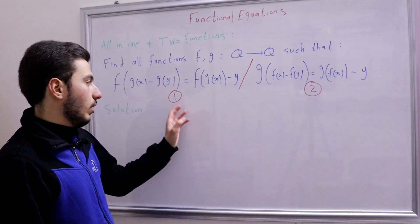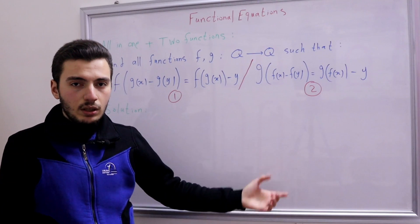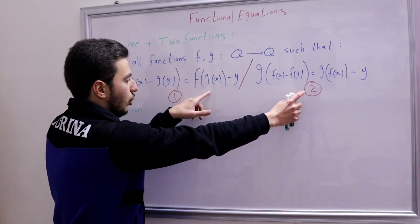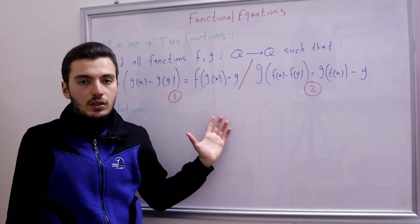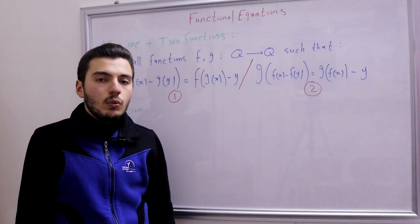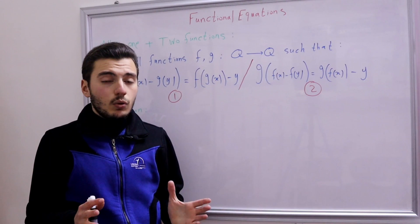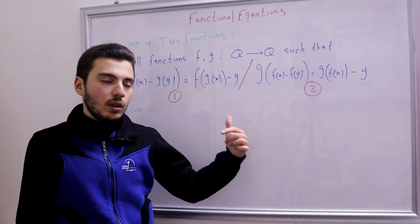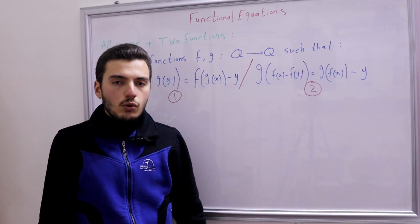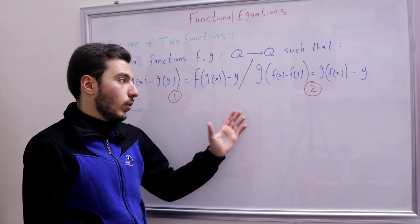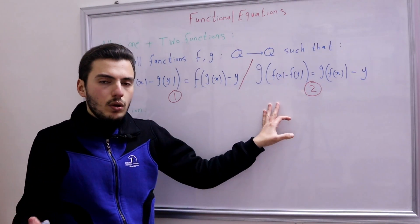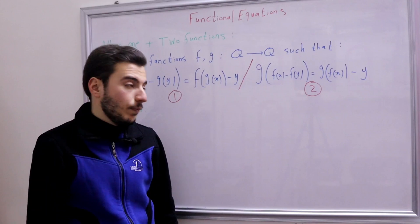The first thing you can notice is that these two functional equations are basically symmetric. We have f where the other has g, and g where the other has f, while x and y are preserved in both equations. That means whatever we can prove for f, we can do the same for g and vice versa. If we've shown that f satisfies some property, we can immediately say by symmetry that g satisfies the same property — no need to repeat the proof.